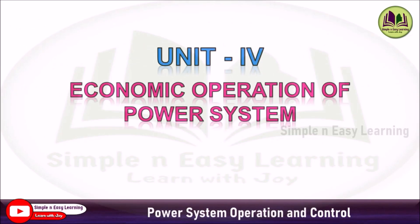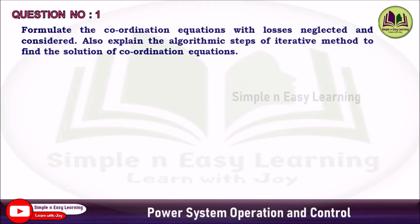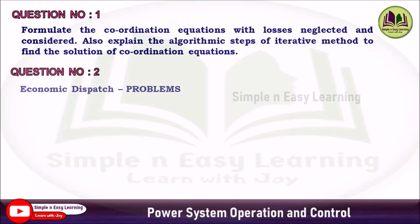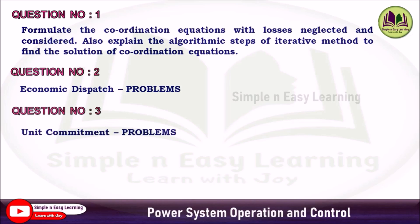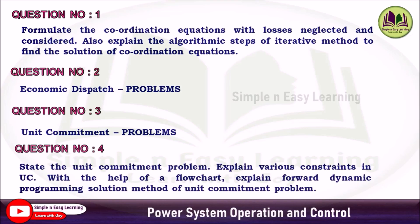Unit 4: Economic Operation of Power System — Question 1 (Priority 1): The coordination equation and flowchart algorithm of economic dispatch with and without loss. Question 2 (Priority 2): Numerical problems based on economic dispatch. Question 3 (Priority 3): Numerical problems based on unit commitment. Question 4 (Priority 4): Statement of unit commitment, constraints, and forward dynamic programming solution using a flowchart.